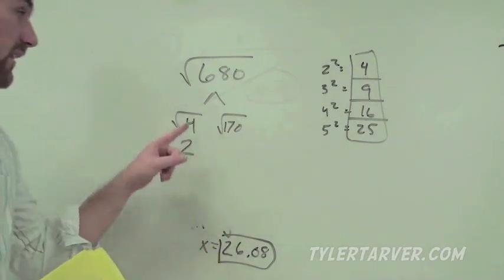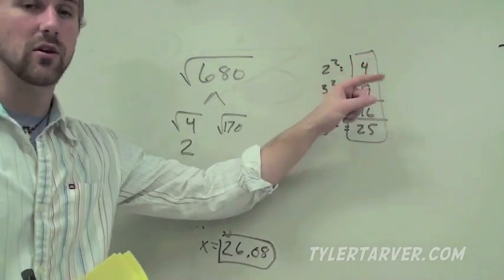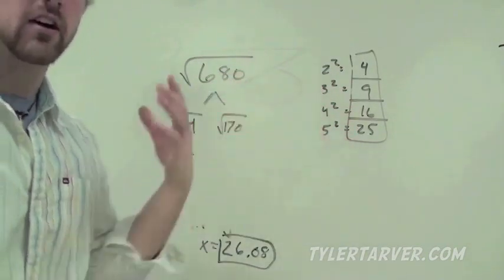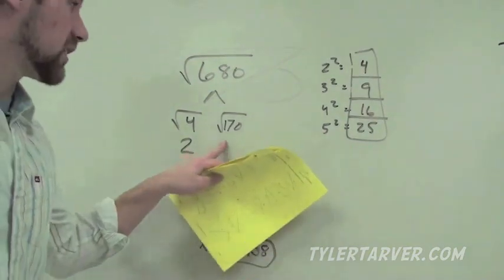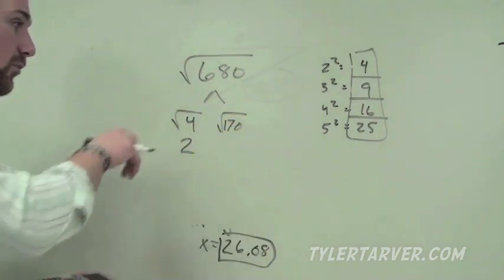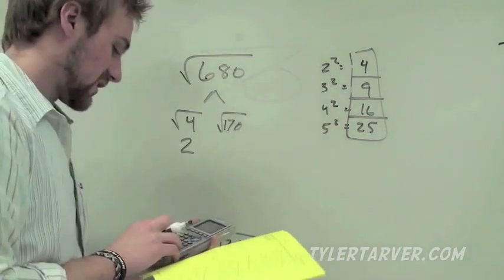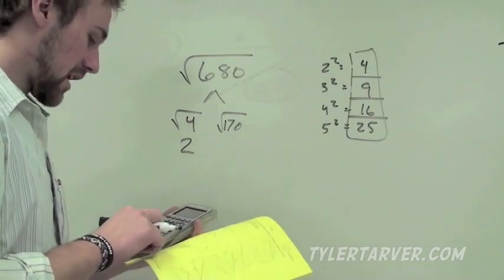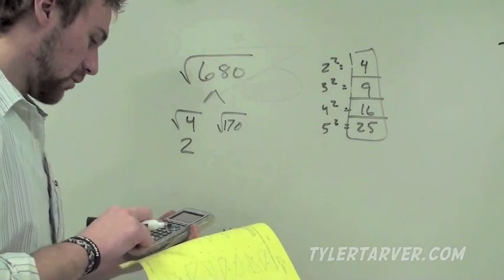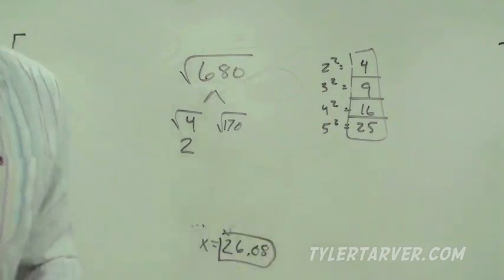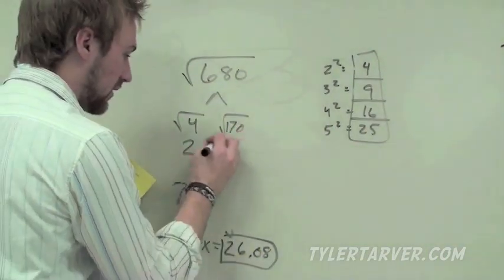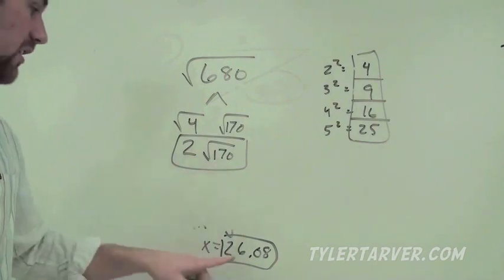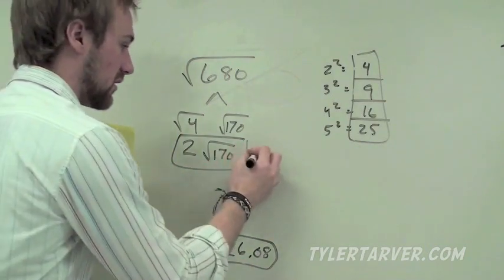The square root of 4 is 2 — that's exactly why we look for those perfect square numbers. The square root of 9 is 3, square root of 16 is 4, square root of 25 is 5. Now check if anything goes into 170: 25 doesn't, 16 doesn't, 9 doesn't, 4 doesn't. So this is as simple as it gets. Bring it all down: the answer is 2 times the square root of 170, which equals 26.08.